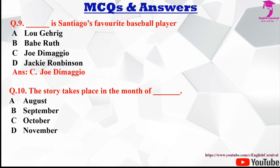Question number ten: The story takes place in the month of dash. Options are August, September, October, and November. The correct answer is B, September.